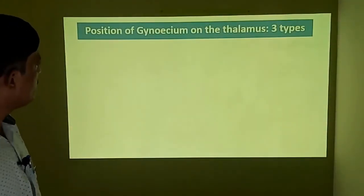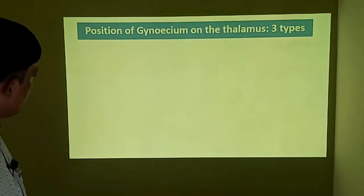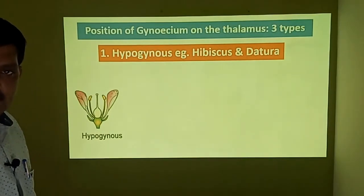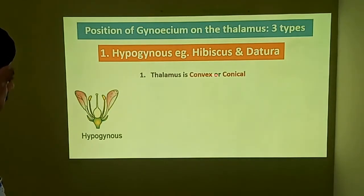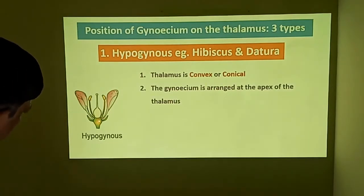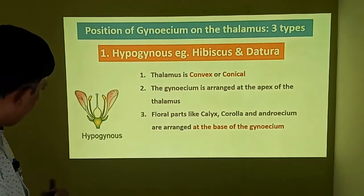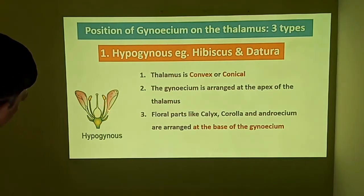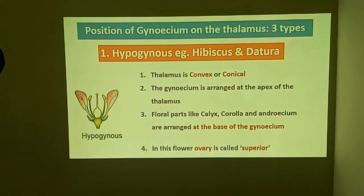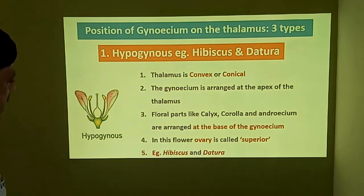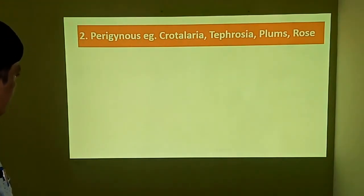There are three types based on position of the gynoecium and thalamus. In the hypogynous condition, the thalamus is convex or conical in shape, and the gynoecium is arranged at the apex of the thalamus. The remaining floral parts — calyx, corolla, and androecium — are all arranged at the base of the gynoecium. In this flower, the ovary is called a superior ovary. Examples are Hibiscus and Datura.